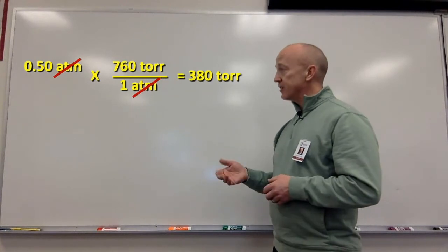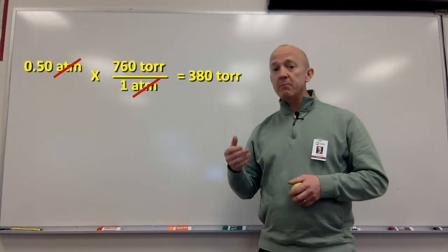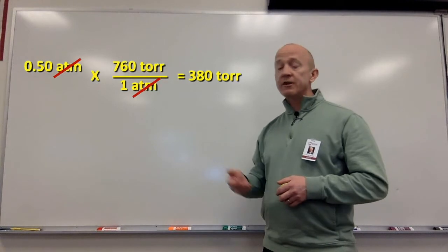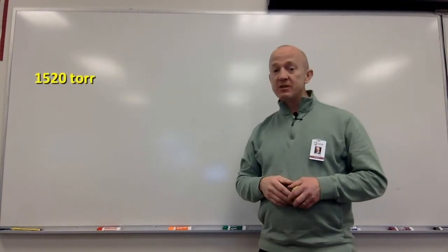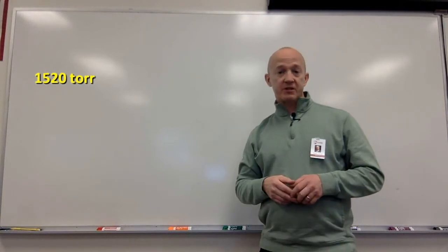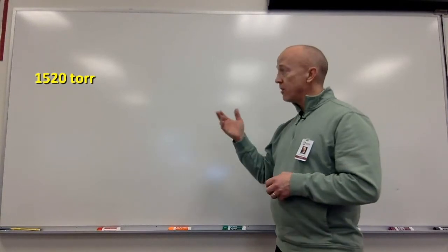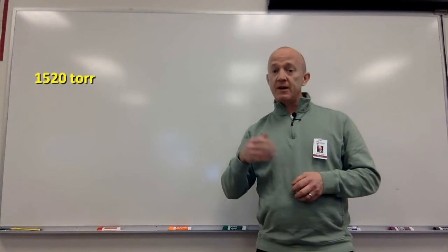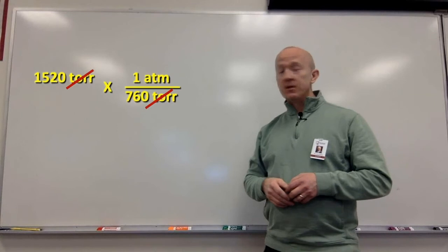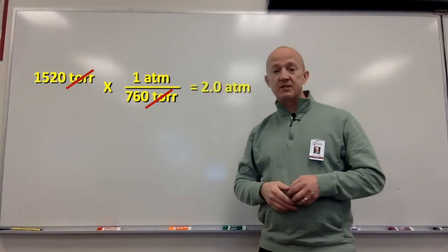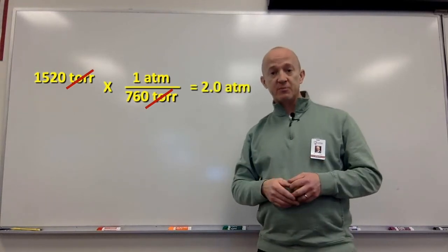If I'm going from tor back to atmospheres, I would simply divide by 760, wouldn't I? If I have a pressure of 1,520 tor and want to find out how many atmospheres that is, I'll simply divide by 760. So, 1520 divided by 760 gives me 2 atmospheres of pressure.